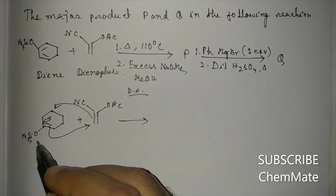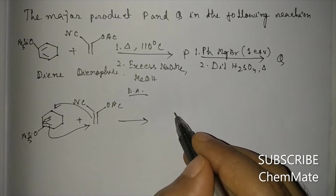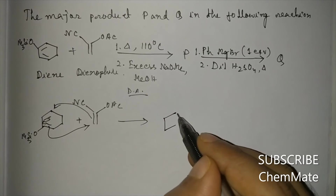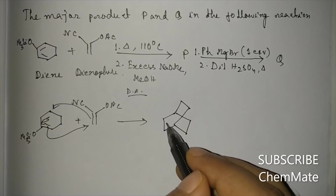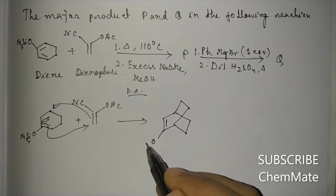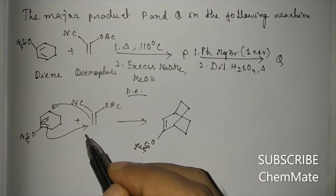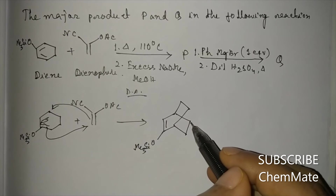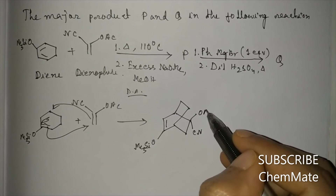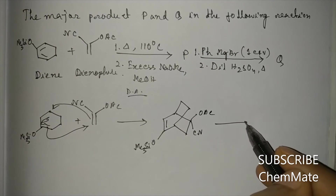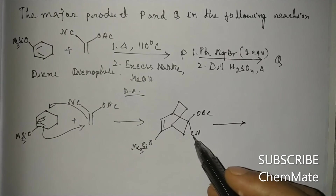With 1,4-regioselectivity, a bridged bicyclic system is formed. The double bond is retained; OTMS is in the exo position and CN is in the endo position due to secondary orbital interactions — electron-withdrawing groups prefer the endo position.